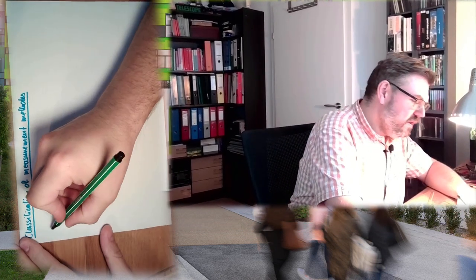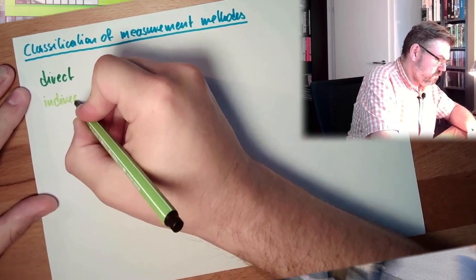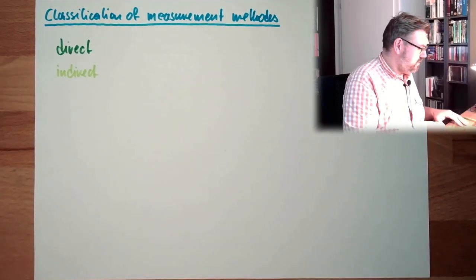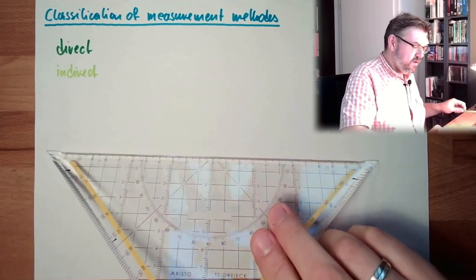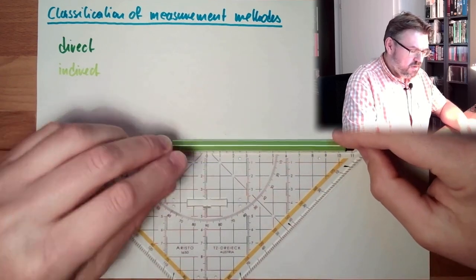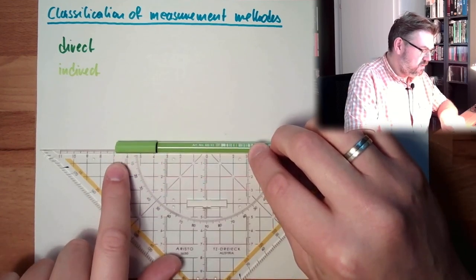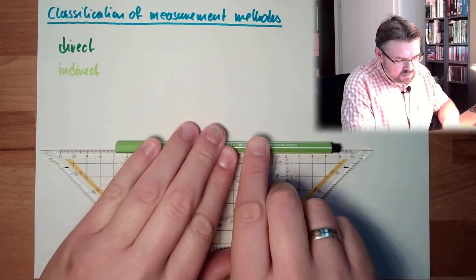So first thing to distinguish two measurement methods would be direct measurement, direct and indirect. What is a direct measurement? If I want to have the length of my pen here, I put it next to a scale, measure it and then I realize it's 16.8 centimeters.